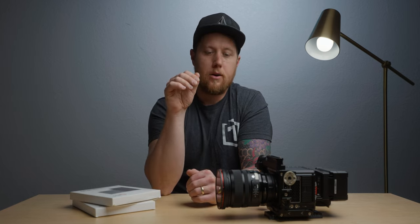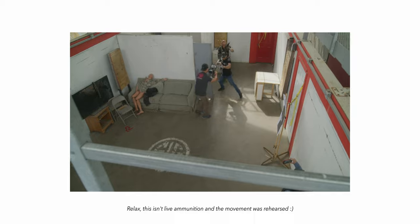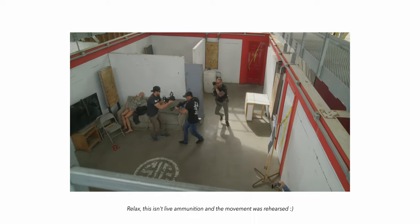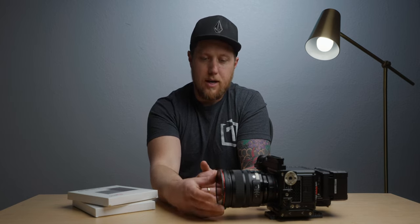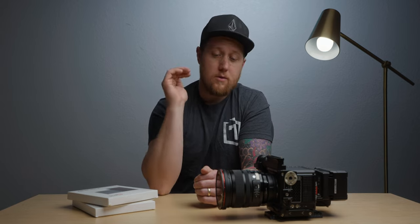So for me, I prefer to use a variable ND filter or square filters. Variable ND filters are really good for fast-paced run-and-gun style filmmaking. I do quite a bit of run-and-gun documentary-style filmmaking, and that's where a variable ND really comes into play — you have the ability to quickly change exposure on the fly and make really minute adjustments. Convenience is the biggest advantage of variable NDs.